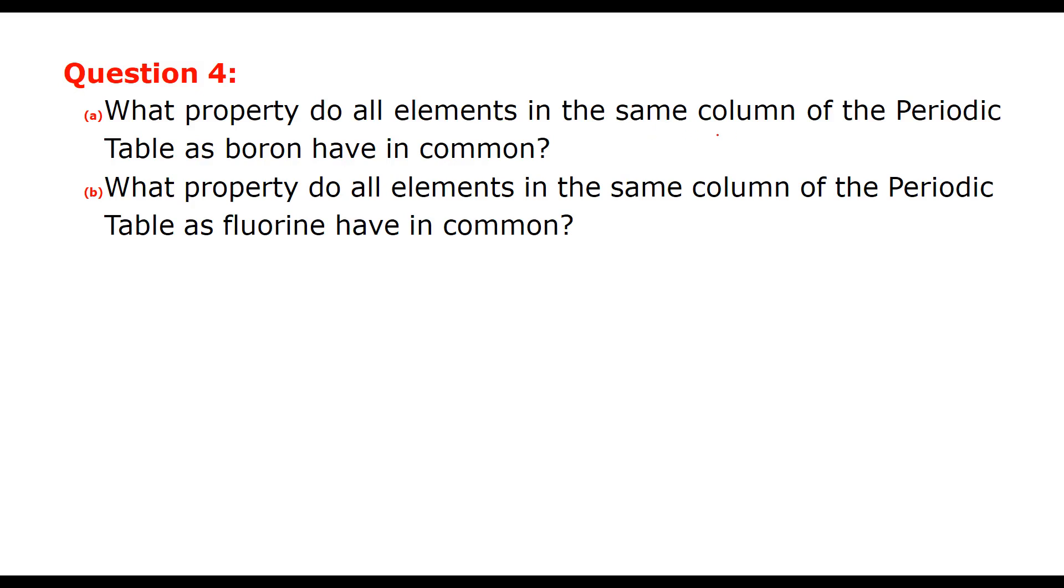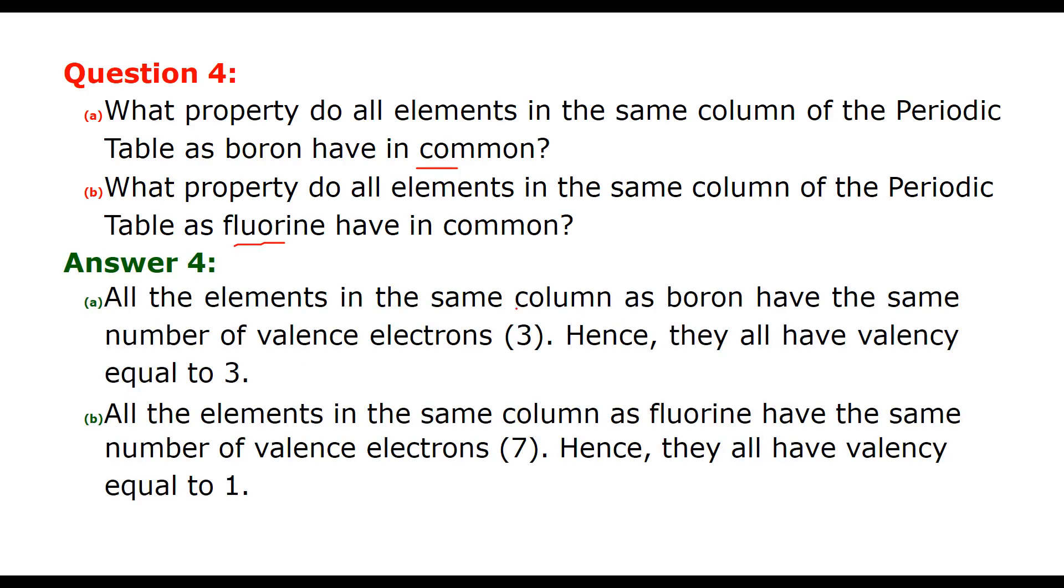What property do all elements in the same column of the periodic table as boron have in common? And same question is with fluorine. Now with boron, as we just saw in the previous question, the valence electron is 3. So the valence is 3 for all those which are in the same column along with boron. This is the same column. All will have valence of 3. And in case of fluorine, all the elements in the same group will have valence electron as 7. Because fluorine has 7 in the valence electron. But the valence will be 8 minus 7 which is 1. So all have valence of 1.